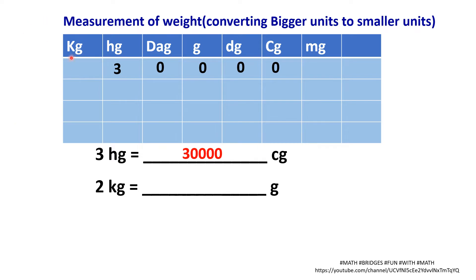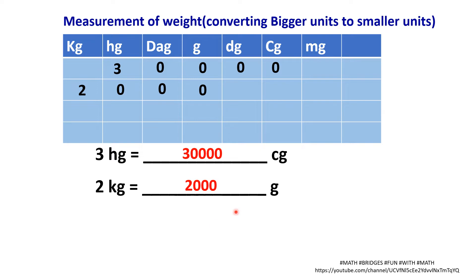Next example: convert 2 kg into grams. Identify where kg is and write 2 there. We are converting to grams, a smaller unit. Fill the remaining empty boxes with zeros. From kg to gram is three steps of multiplying by 10, which means multiplying by 1000. Therefore, 2 kg equals 2,000 grams.